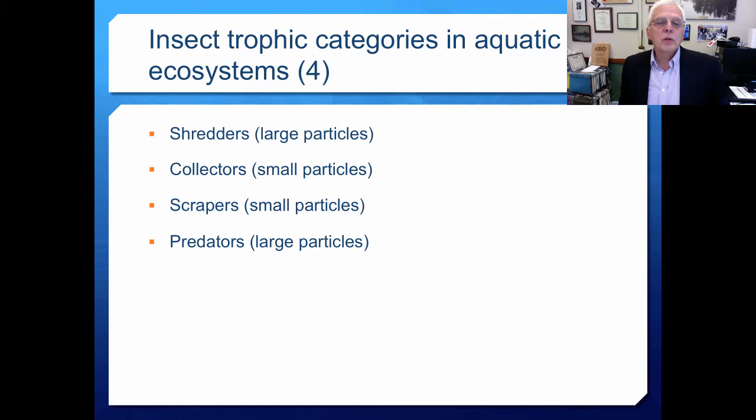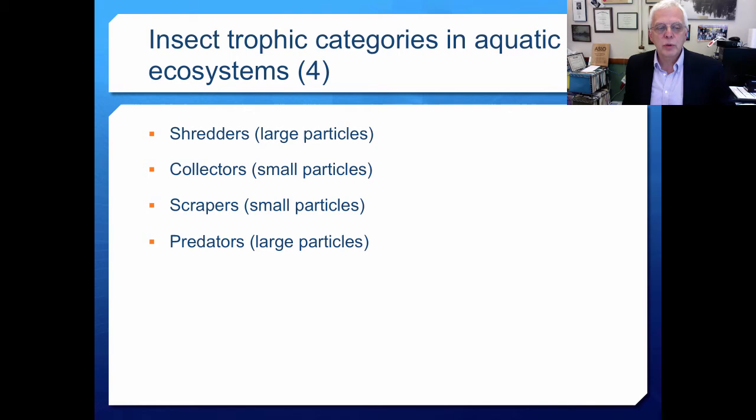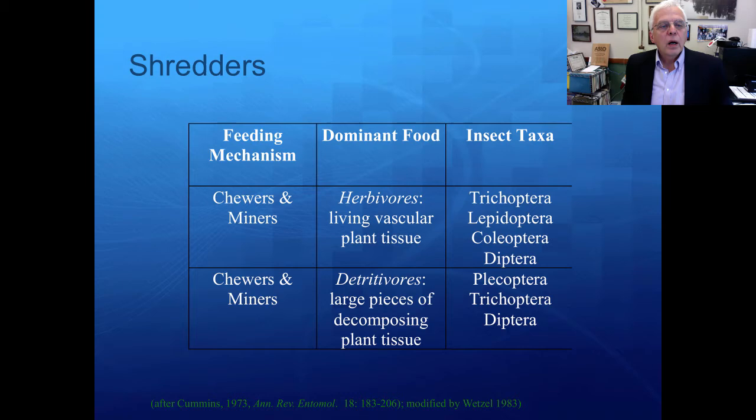In streams we think of four main trophic categories: shredders, who rip up large particles; collectors, who collect small particles; scrapers, who take small particles off surfaces; and predators, who take large particles in the form of shredders, collectors, and scrapers as their food resource.